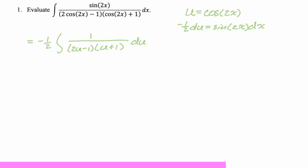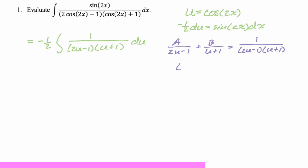Now I have to do partial fractions, so I'll break it up: a over (2u minus 1) plus b over (u plus 1) equals 1 over (2u minus 1)(u plus 1). If we let u equal positive 1/2, we'll be figuring out what a is. You cover up the (2u minus 1), plug in 1/2, and get 1 over 3/2, which is 2/3.